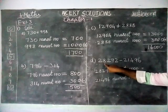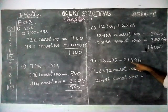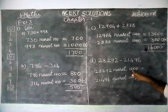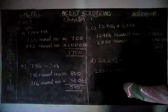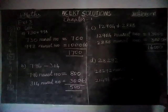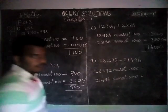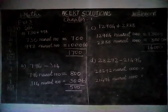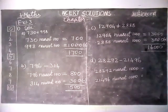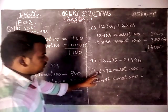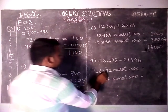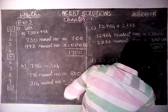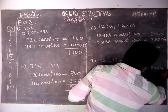And next, option D: 28292 minus 21496. This is also a 5-digit number, so we have to convert into nearest 1000. We have to check the 100th place of 28292 — it is 2. When 2 is coming, previous 1000 we have to choose. So the previous 1000 is 28000.